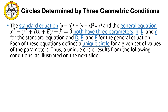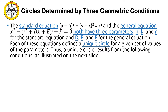Circles determined by three geometric conditions. For the standard equation x minus h squared plus y minus k squared equal to r squared, we must be identifying h, k, and r. The general equation is x squared plus y squared plus dx plus ey plus f equal to zero, with parameters h, k, and r, or d, e, and f for the general equation. Each of these equations defines a unique circle for a given set of values of these parameters.